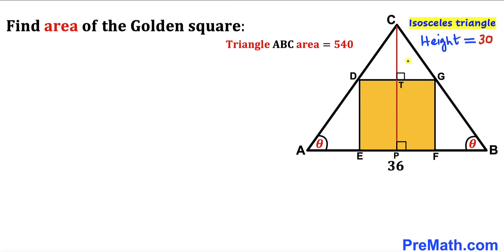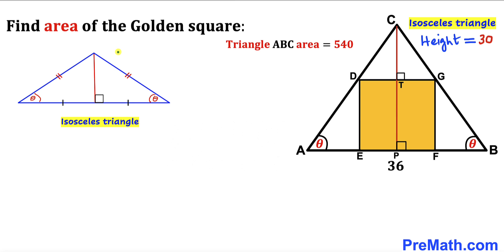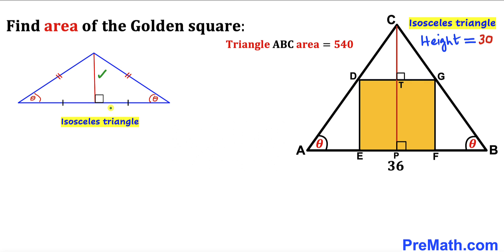In the next step, I drop the perpendicular CP. Recall a crucial property: in an isosceles triangle, where two side lengths and two angles are congruent, dropping a perpendicular from the apex divides the base into two equal parts. Therefore, length DT equals length TG, and likewise EP equals PF.